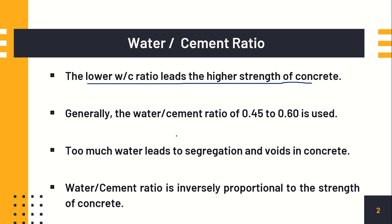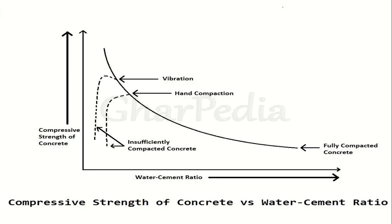We use plasticizers to prevent segregation and bleeding. With more water, workability and mobility increase, but segregation and bleeding become problems. Water cement ratio and strength are always inversely proportional. In the graph on screen, water cement ratio is on the x-axis and compressive strength on the y-axis — as water cement ratio increases, you can see the strength of the concrete falling down.